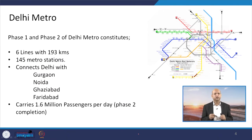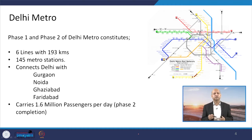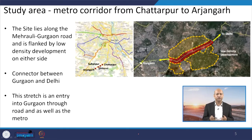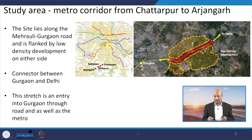The particular section we are discussing is related to Phase 1 and Phase 2 of Delhi Metro, constituting 6 lines with around 193 kilometers and 145 metro stations, connecting Delhi with Gurgaon, Noida, Ghaziabad, and Faridabad. It carries around 1.6 million passengers. The study area corridor runs from Chhaterpur to Arjangarh, going towards Gurgaon on one side and Delhi on the other — that is the stretch we are considering.